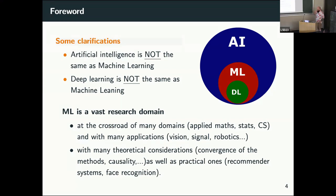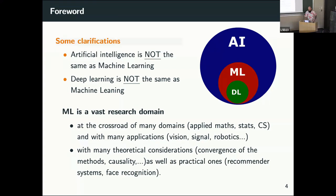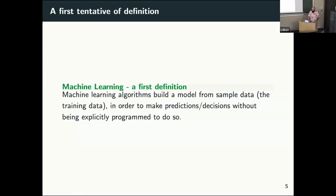It's a domain at the crossroads of many other domains. We use a lot of applied math and statistics and of course some computer science, and it has applications in many, many fields. It can go from very theoretical considerations about the convergence of the method to practical implementation with recommending systems that are on many platforms.